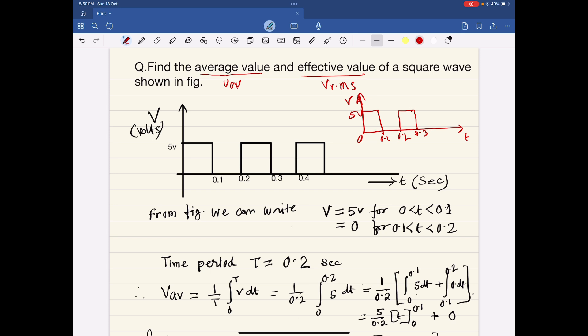We will write the expression of the voltage, that is the function of the voltage. From this figure we can write that V is equal to 5 volt for the period T is greater than 0 less than 0.1.